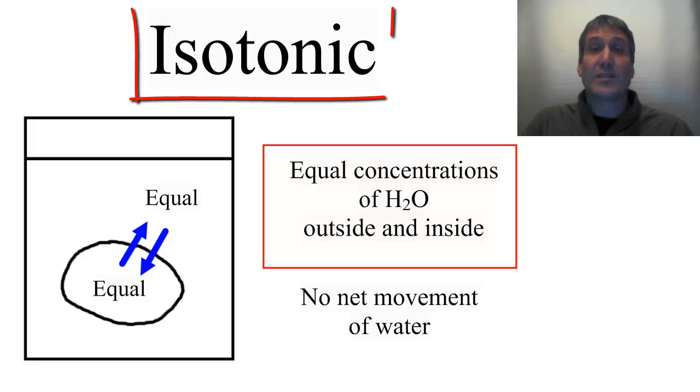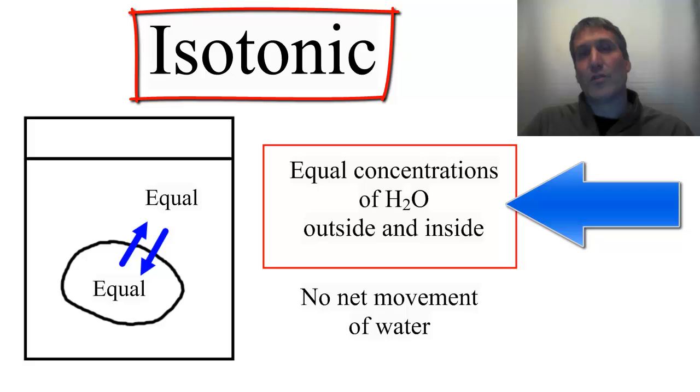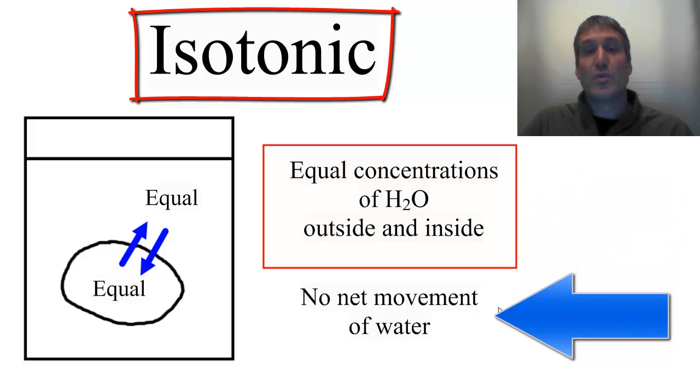The first one is an isotonic solution. This is where you have equal concentrations of water on the inside and the outside of the cell, so there's no net movement of water. The same amount of water is being bumped out of the cell as is being bumped into the cell, so the cell can maintain its water balance.